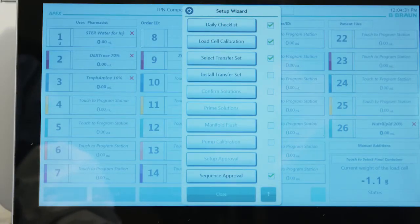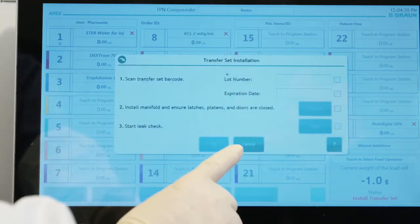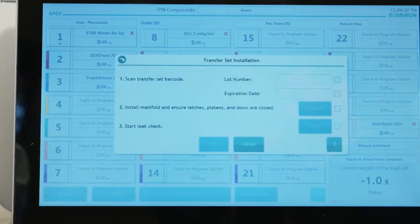To begin the process of installing a transfer set, tap Install Transfer Set from the Setup Wizard. The Transfer Set Installation screen will open.